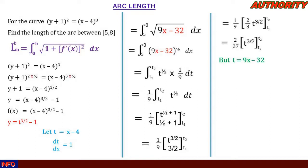Since t = 9x - 32, we substitute back: we have (2/27)[(9x - 32)^(3/2)] evaluated from 5 to 8. The substitution limits t₁ and t₂ are replaced by the original limits 5 to 8.